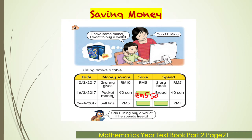At 24 April 2017, Li Ming sells things and gets 50 cents, so the total of his money is RM10.50. Then he spends 50 cents to buy an ice cream, so his balance is now RM9.50, because RM10.50 minus RM1.00. Can Li Ming buy a wallet? No — at that moment he cannot buy a wallet because his money is less than the price of the wallet.